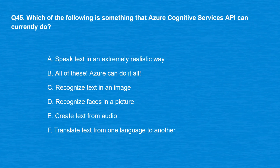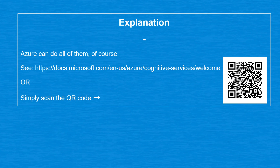Question 45: Which of the following is something Azure Cognitive Services API can currently do? Option A: Speak text in an extremely realistic way. Option B: All of these — Azure can do it all. Option C: Recognize text in an image. Option D: Recognize faces in a picture. Option E: Create text from audio. Option F: Translate text from one language to another. The correct answer is Option B, all of these — Azure Cognitive Services can do all of them.